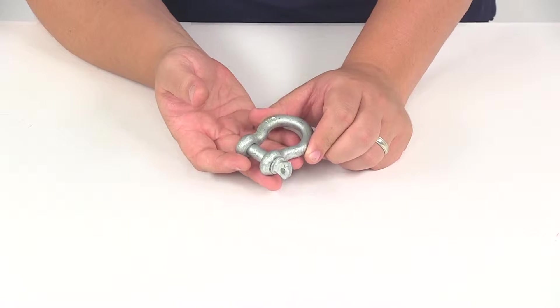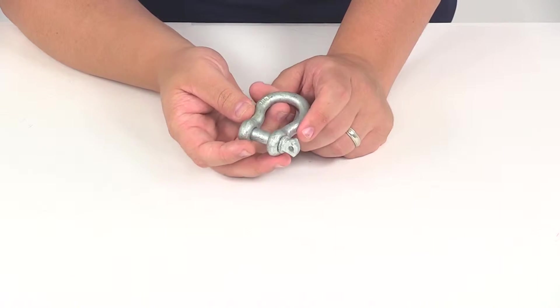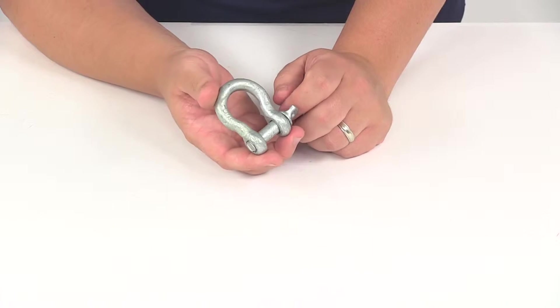Today we're going to be taking a look at part number GS06. This is the Brophy Shackle with the screw pin design. With this part number you're going to get one shackle.